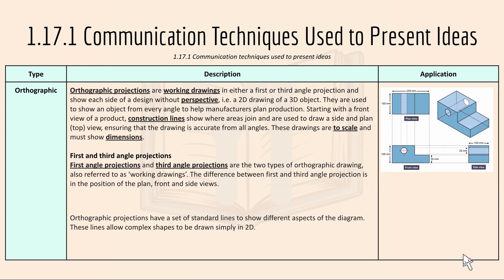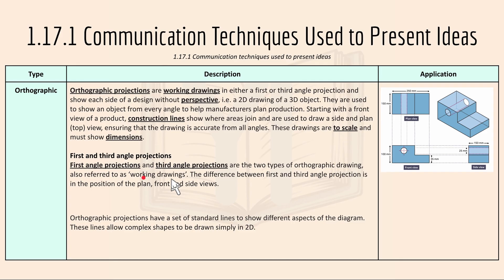Then we have orthographic projection. Orthographic projections are working drawings in either first or third angle projection, showing each side of a product without perspective — essentially 2D drawings of a 3D object. They are used to show an object from every angle to help manufacturers plan a product. These drawings are to scale and must show dimensions. First angle and third angle projections are the two types of orthographic drawings, and the difference between them is the position of the plan, front and side views. Orthographic projections have a set of standard lines to show different aspects of a diagram, allowing complex shapes to be drawn simply in 2D.